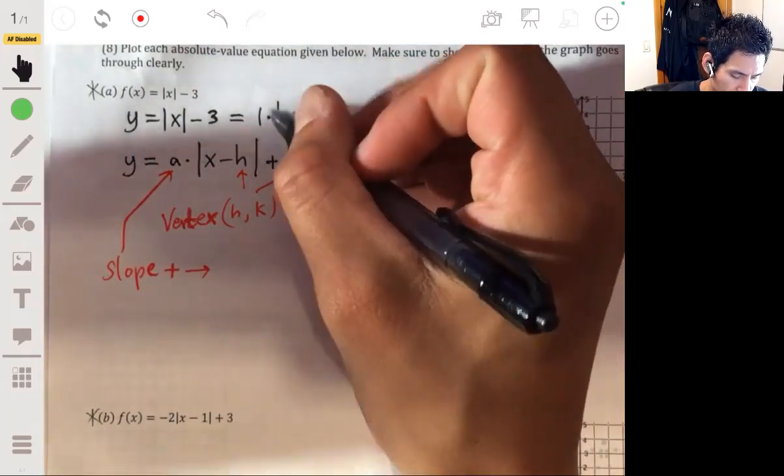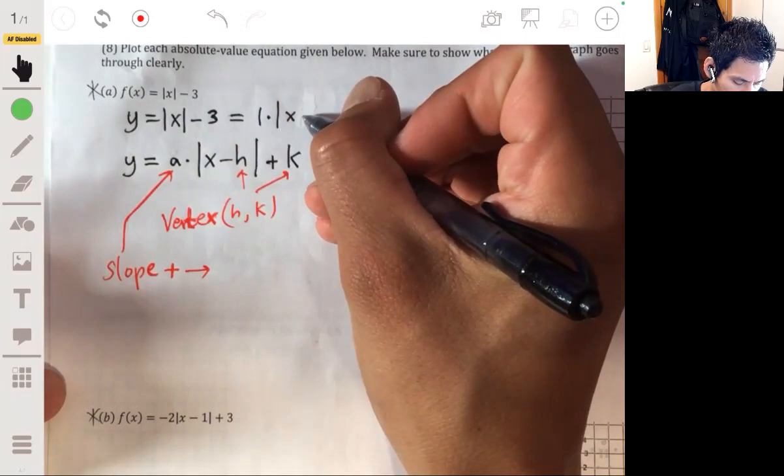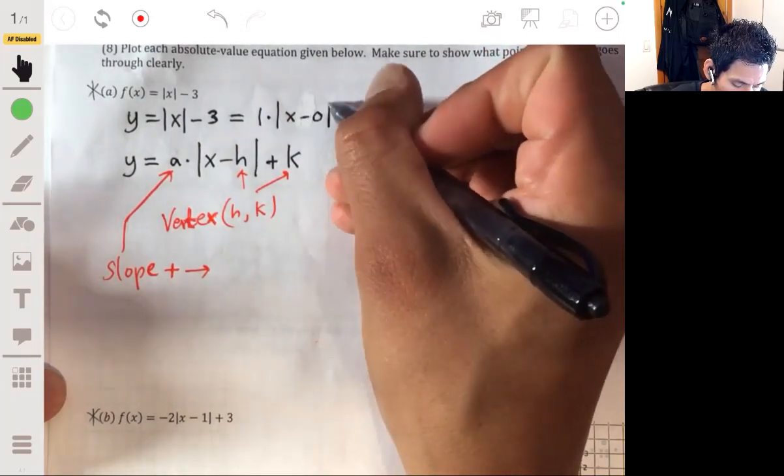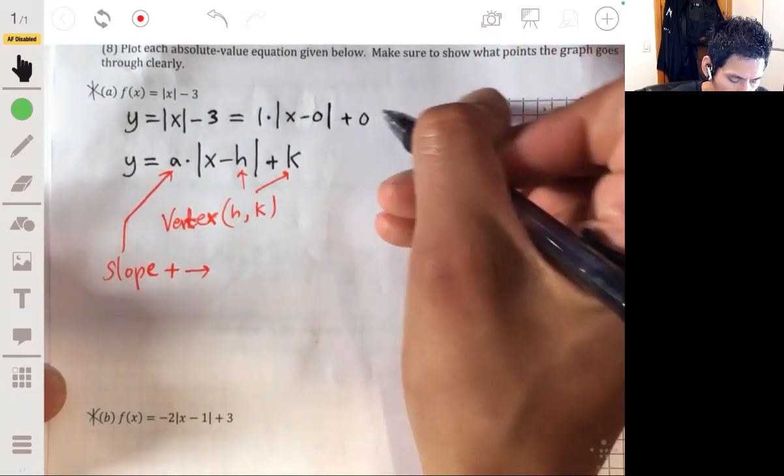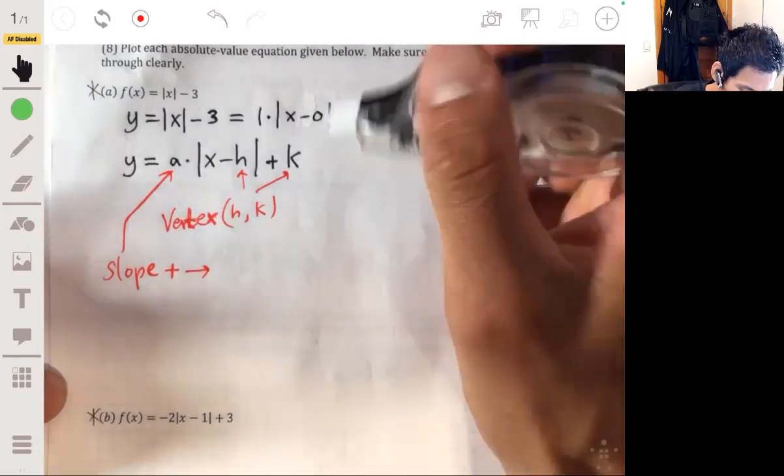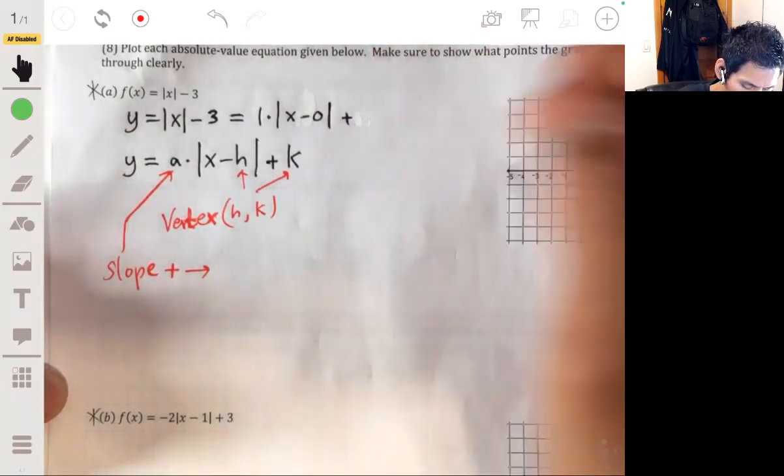This is the same as one times the absolute value of x minus zero plus zero, no not zero, plus three. Minus three.